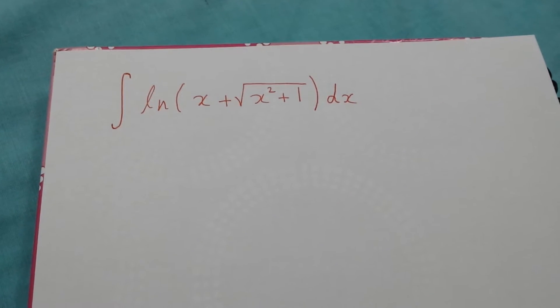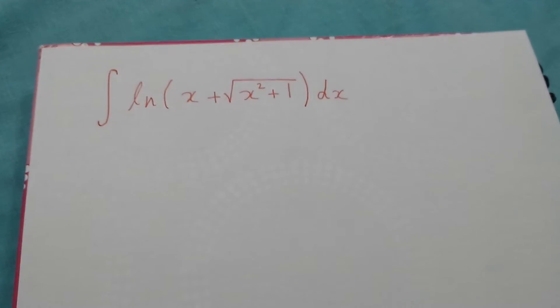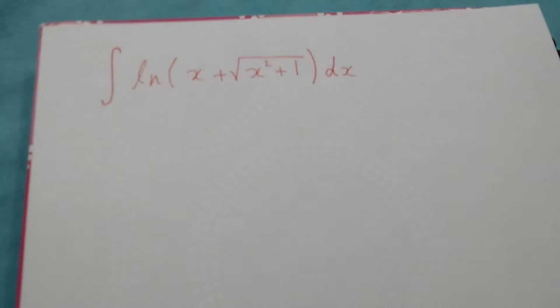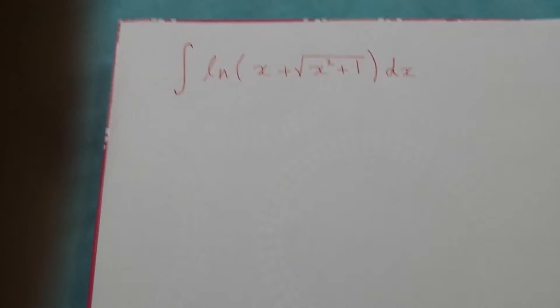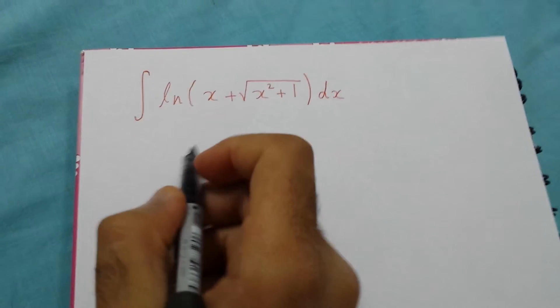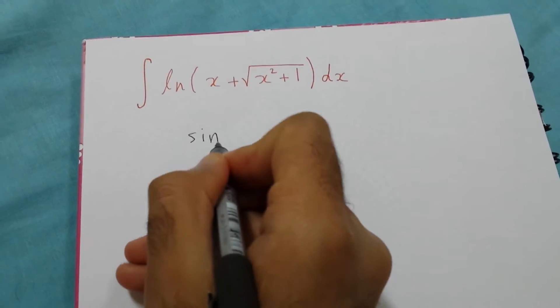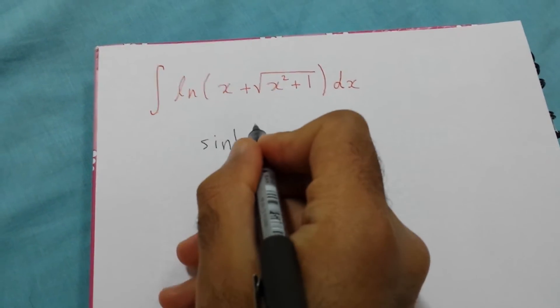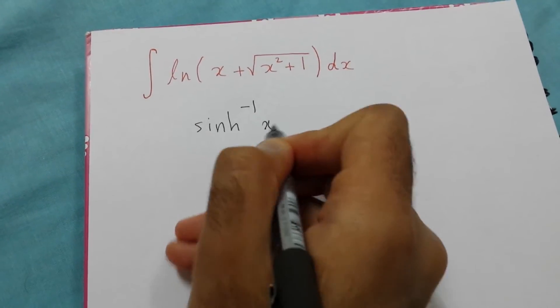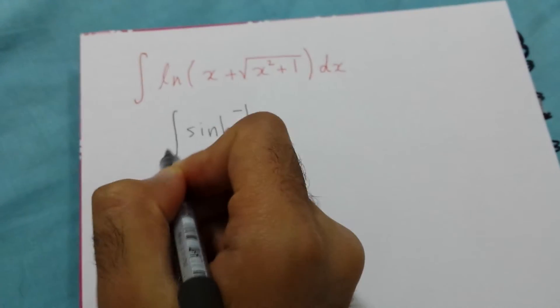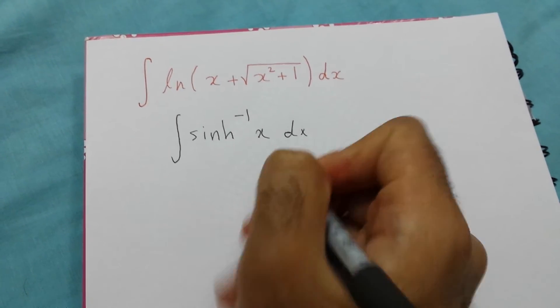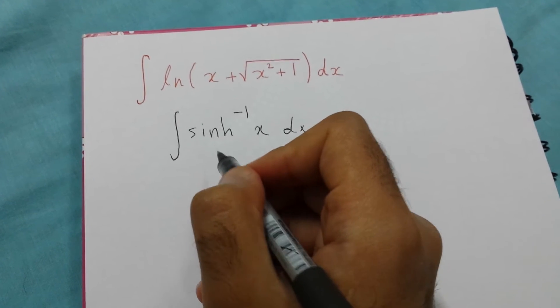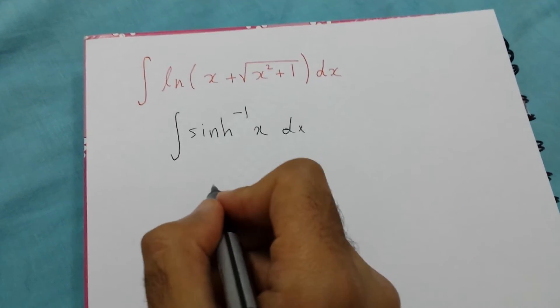How to evaluate this integration: ln(x + √(x²+1))dx is actually equal to sinh⁻¹(x). So this is the same as the integral of sinh⁻¹(x)dx. Now we use integration by parts.